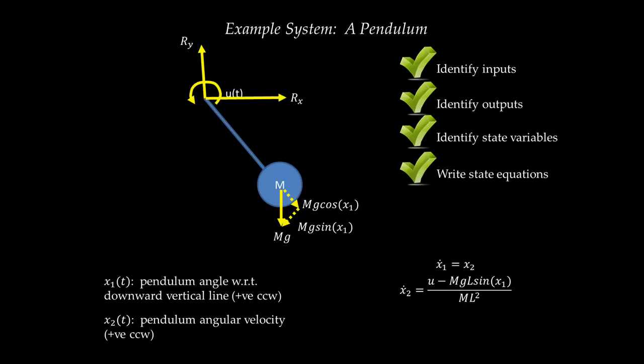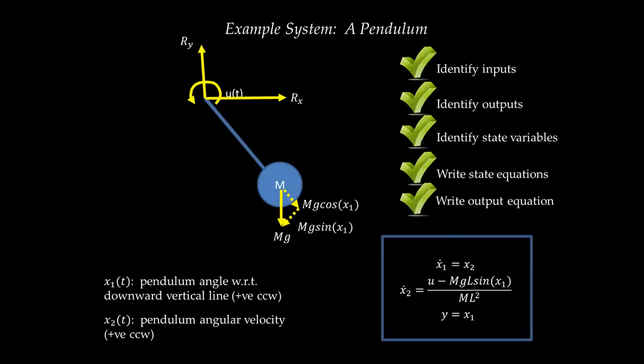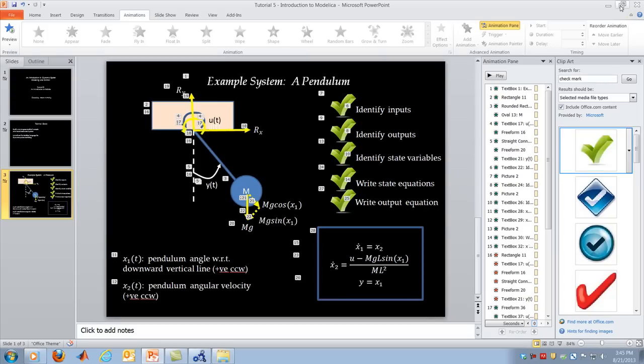With the state equations complete, the output equation is simply Y = X1, since the output angle is the same as state variable X1. This completes the state-space model: X1 dot = X2, X2 dot = (U − MgL·sin(X1)) / ML², and Y = X1. We've successfully derived the state-space representation of a simple rotational mechanical system.